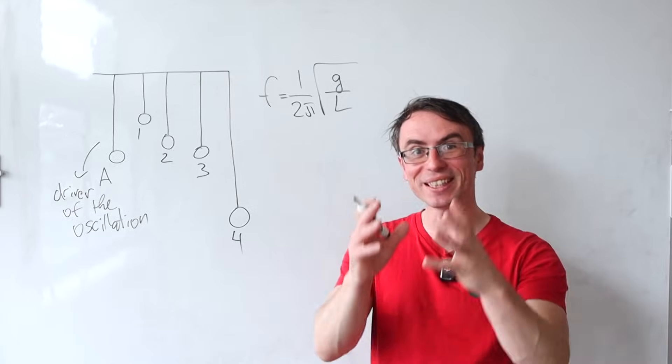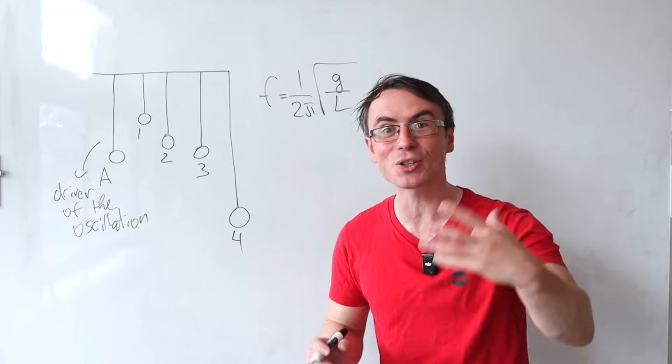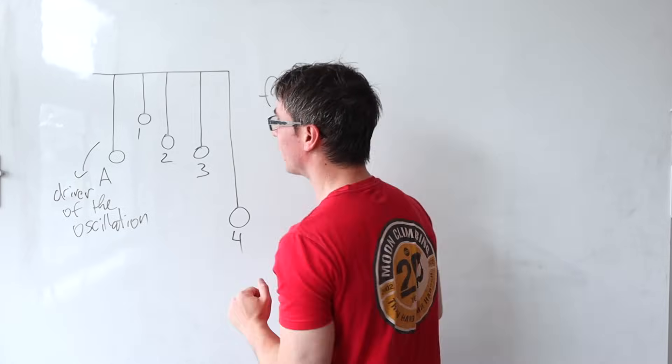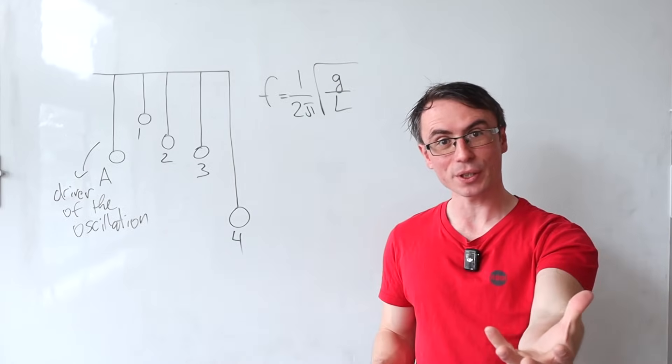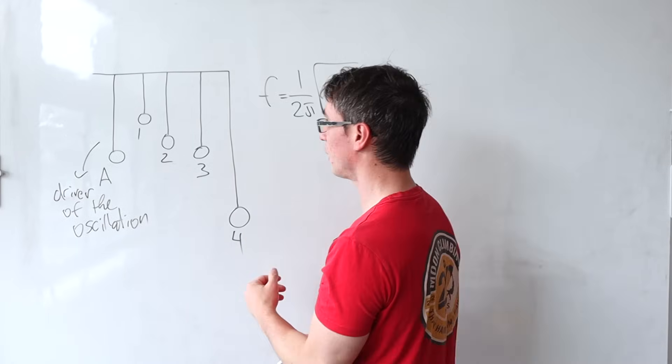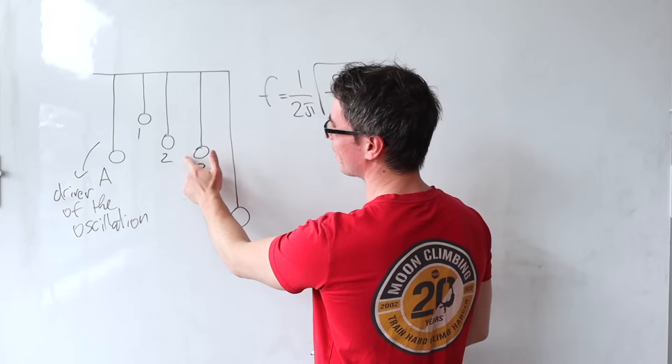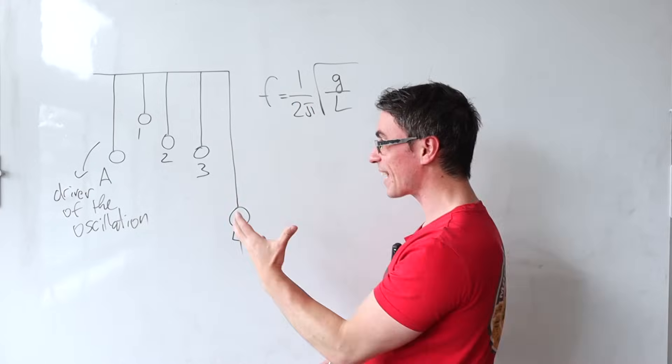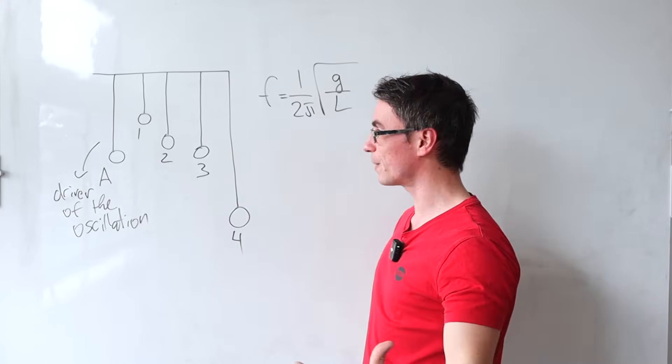Now, resonance occurs whenever the driving frequency matches the natural frequency of an object. Pendulum 1 is going to have a very different natural frequency, because its length is different. Pendulum 2 will also have a slightly different natural frequency, but 3 has exactly the same natural frequency.